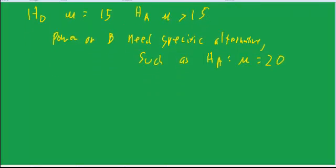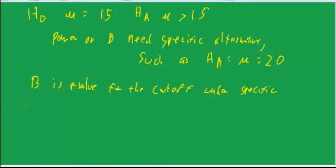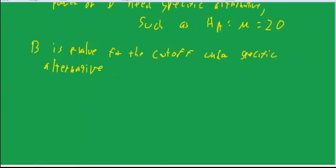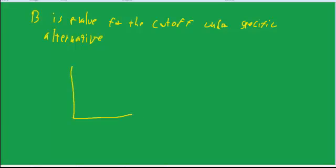And what our strategy will be is essentially beta is the p-value for the cutoff under the specific alternative. Now a lot of books on this will draw two sketches next to each other, one with the null hypothesis, let's say 15, and one with the alternative 20, and then they'll specify an area that's the power. I think having two curves on the same graph is confusing, so I prefer to do it one at a time.